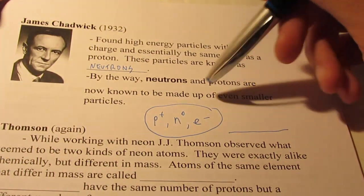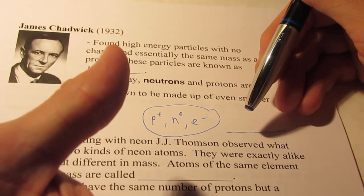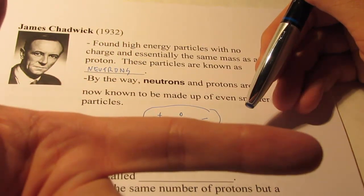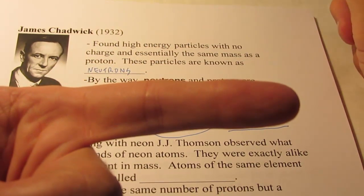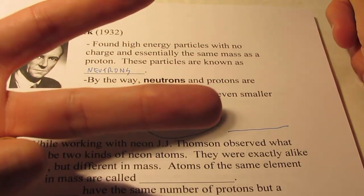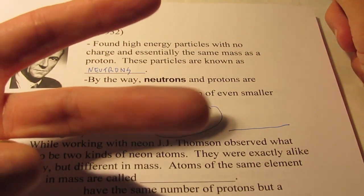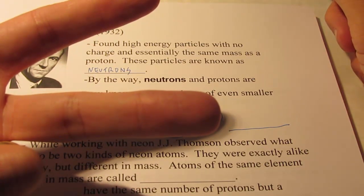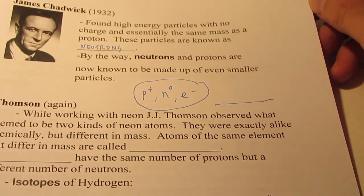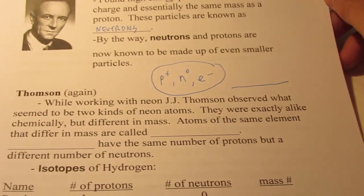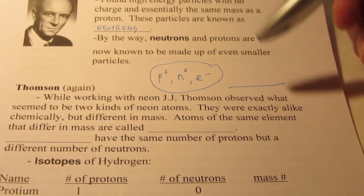Just as a quick recap, you should be familiar with the Dalton theory of the atom - we called that the billiard ball model. We had the Thomson model of the atom, which was the plum pudding model. And then we had the Rutherford model of the atom. He's the guy that discovered the nucleus, and we called that a planetary model of the atom.